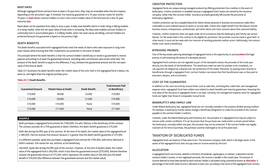Bypassing probate. One of the key estate planning advantages of segregated funds is the opportunity to avoid probate, which is the legal process of administering the estate of a deceased person. Segregated fund contracts are not regarded as part of the deceased estate. The proceeds of the funds pass directly into the hands of the beneficiaries. The beneficiary need not wait for probate to be completed, nor can payment be delayed by a dispute over the settlement of the estate. Moreover, by passing assets directly to beneficiaries through a segregated fund, contract holders can ensure that their beneficiaries save on fees paid to executors, lawyers, and accountants.